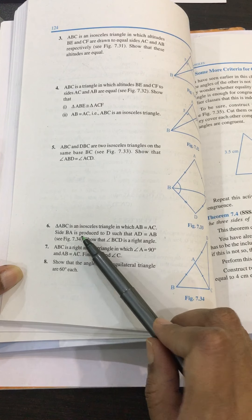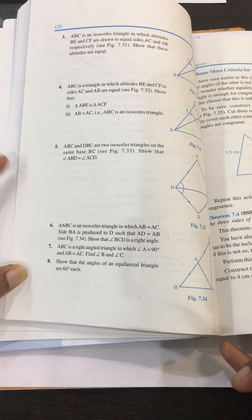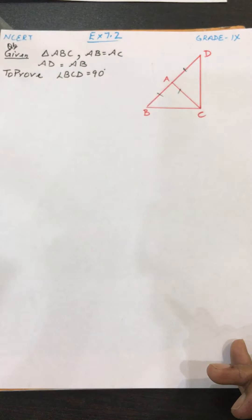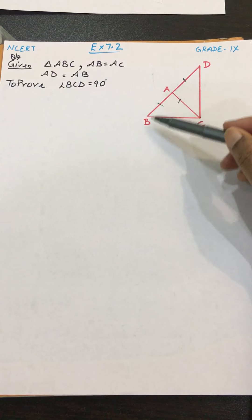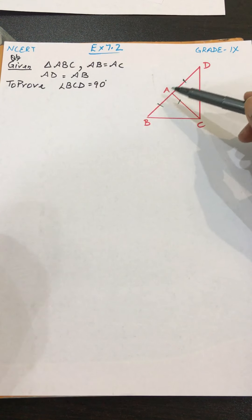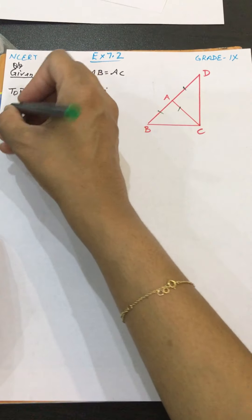So first of all, write down given: triangle ABC, AB equals AC, AD equals AB. And then to prove, in the figure you can see AB equals AC and AD equals AB. So I will start my proof.